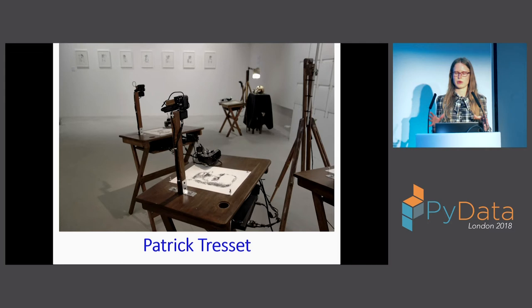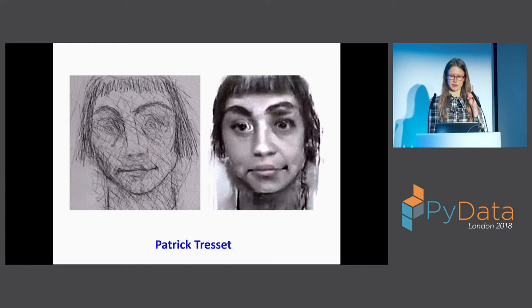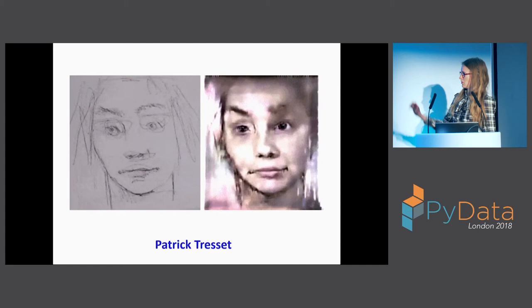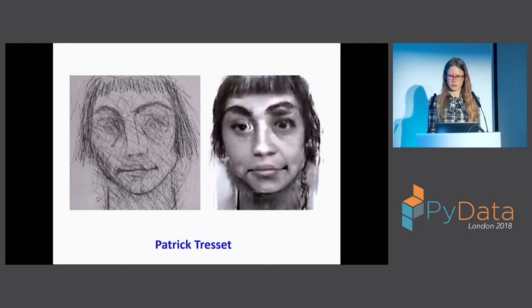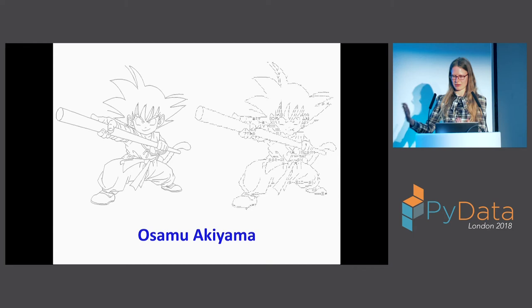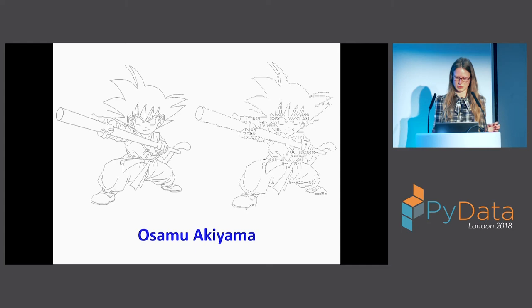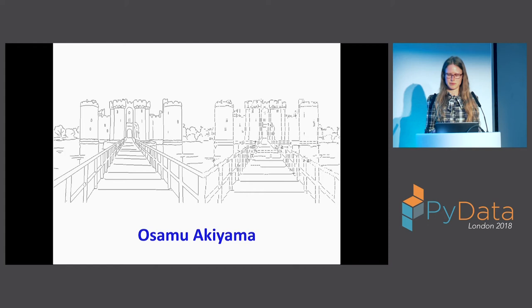There is an artist called Patrick Tresset who has a robot that draws images of people. He accumulated a dataset of about 21,000 drawings, and then got Pix2Pix to generate images of faces back from these drawings. There is also a type of art — I always forget how to pronounce it — that can be fed into the neural networks to generate images that are completely joined and clear. These were done by Osamu Akiyama.